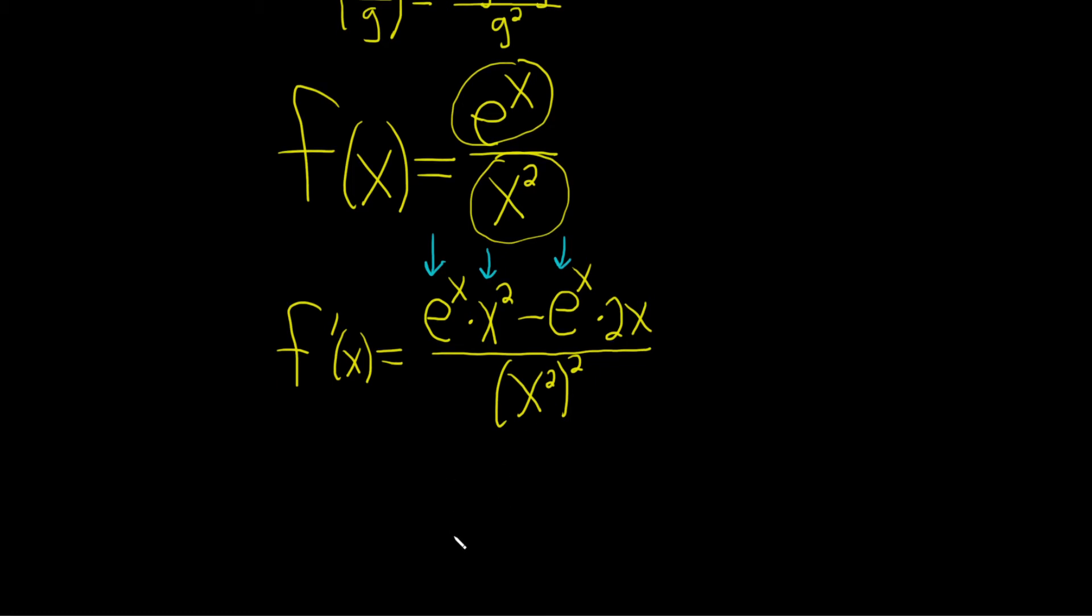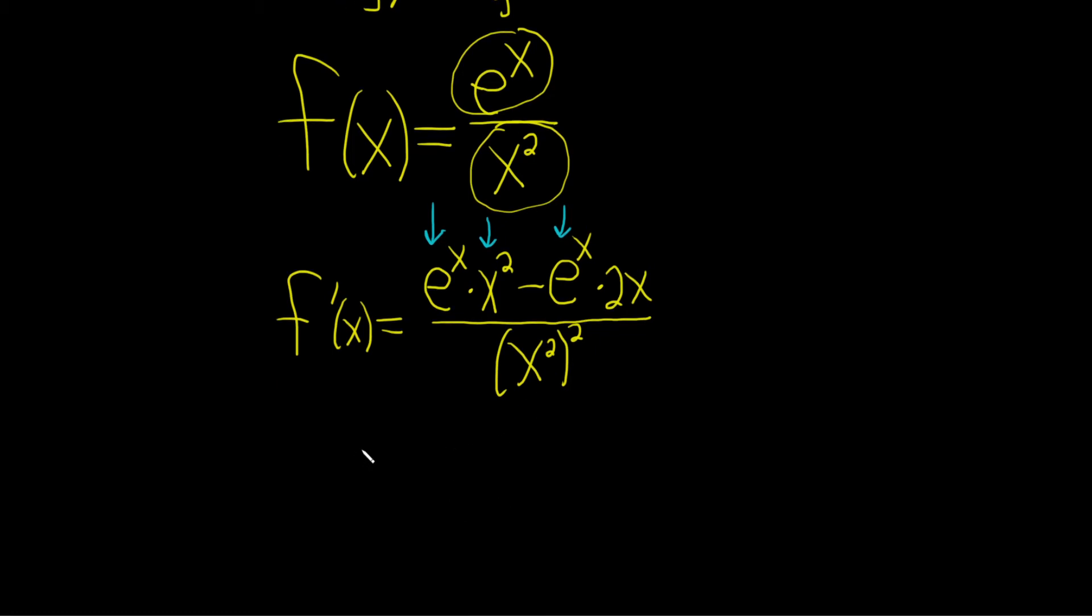Let's clean this up. I think we can factor some stuff out and make it look a little bit better. So f prime of x is equal to, looks like we can pull out an x here. So this is x, and then parentheses x, e to the x.